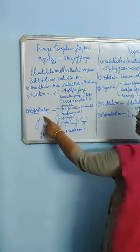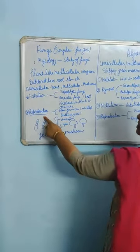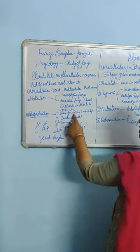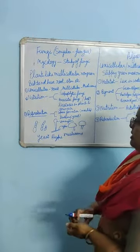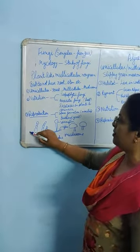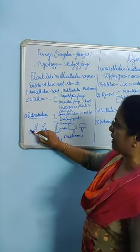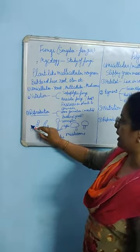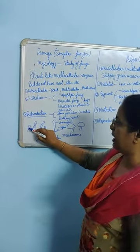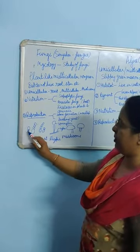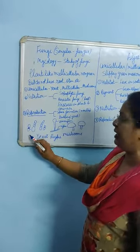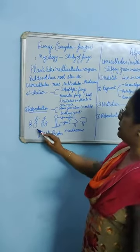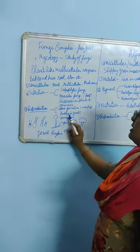Now coming to the mode of reproduction. There are two ways of reproduction — mainly they reproduce asexually by either spore formation or by budding. Yeast is a unicellular organism and an outgrowth arises from its body; that outgrowth is known as the bud. That bud grows in size and attains maximum size. It may detach itself from the body of the parent, or it may remain attached, forming a chain-like structure. This process of reproduction is known as budding.